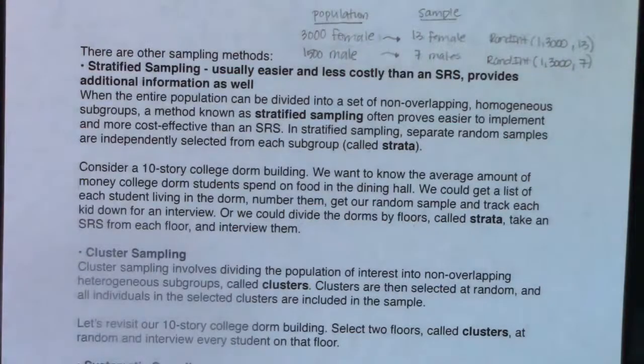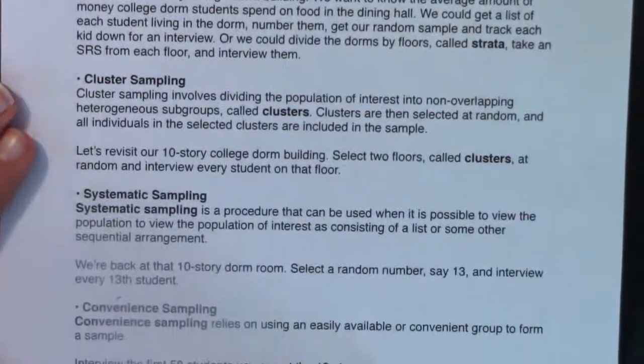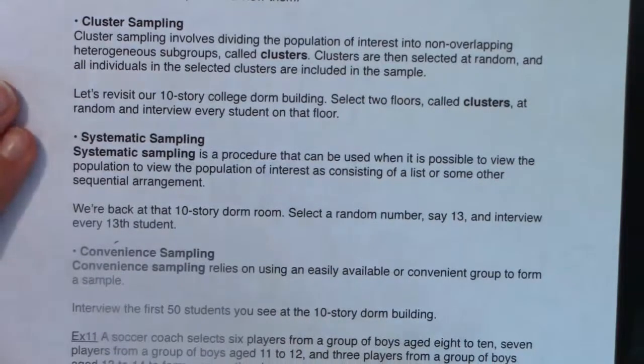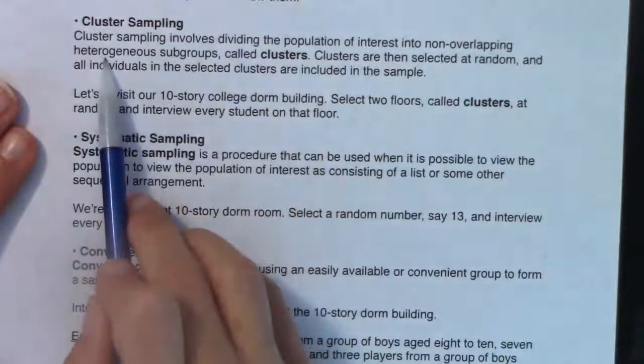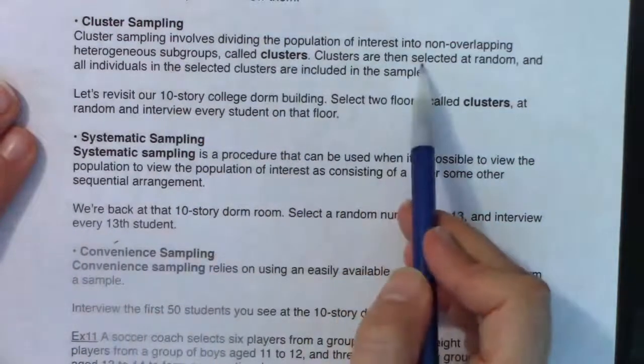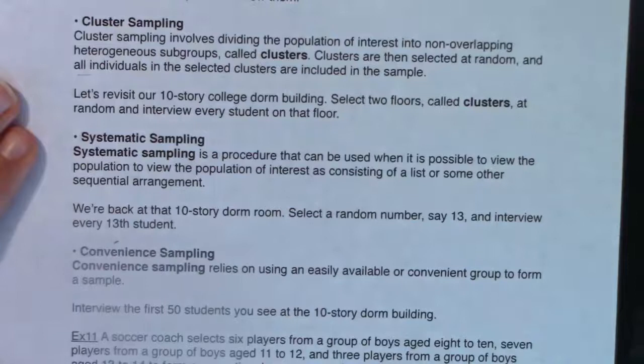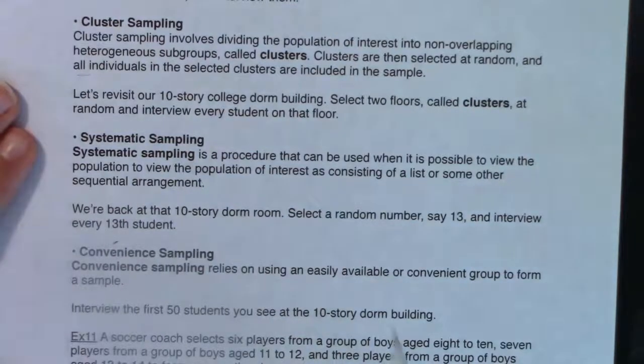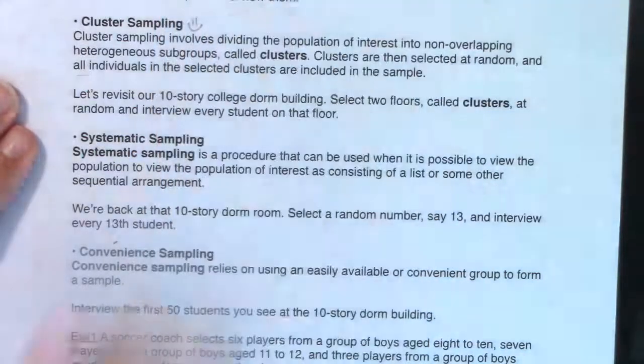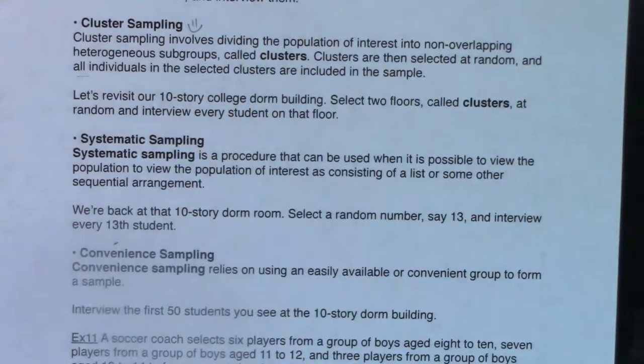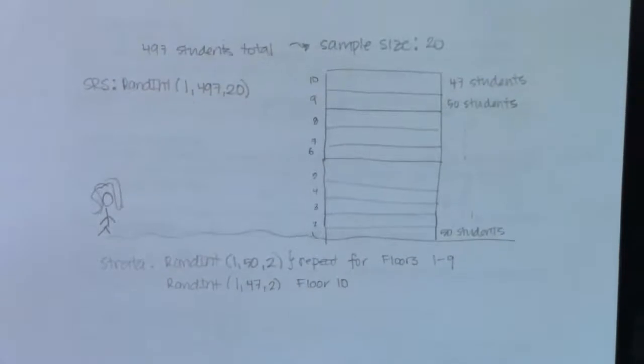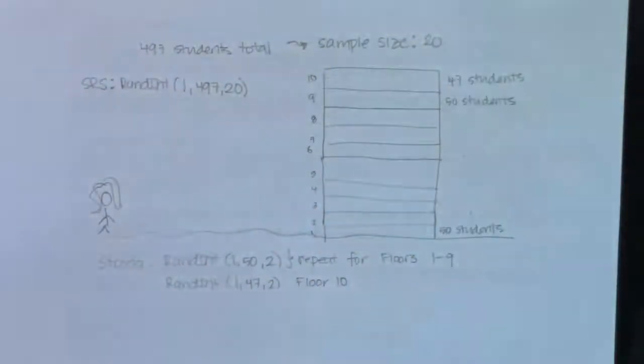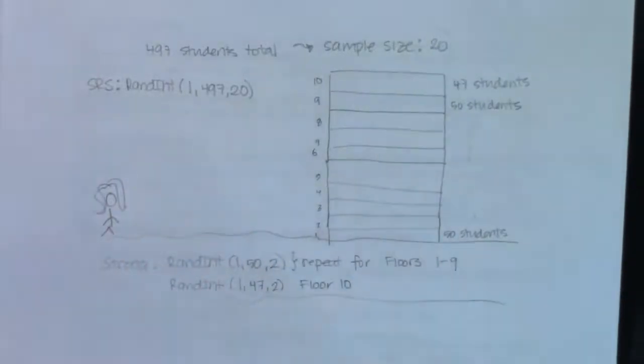Alright, let's take a look at the next method. Cluster sampling involves dividing the population of interest into non-overlapping heterogeneous subgroups called clusters. Clusters are then selected at random, and all individuals in the selected clusters are included in the sample. Cluster sampling, this is my favorite. It allows me to go to fewer places.